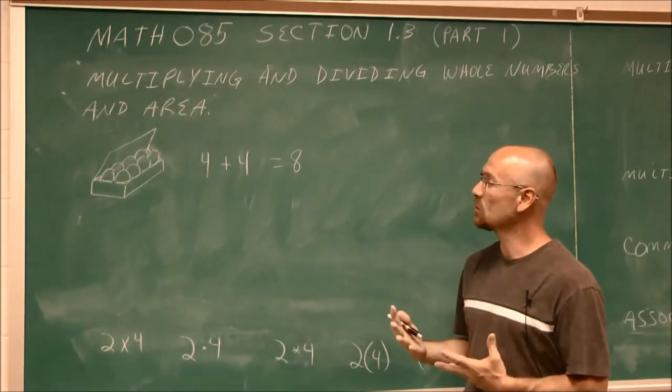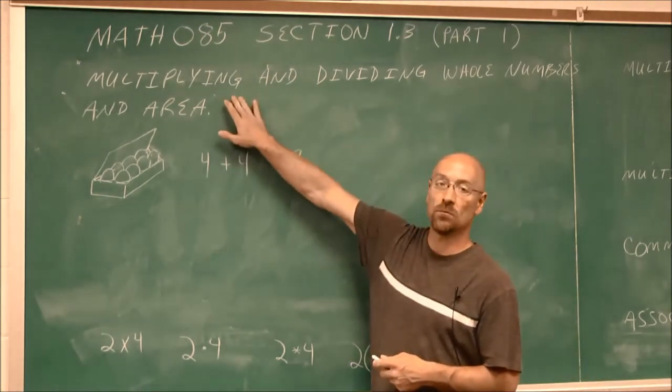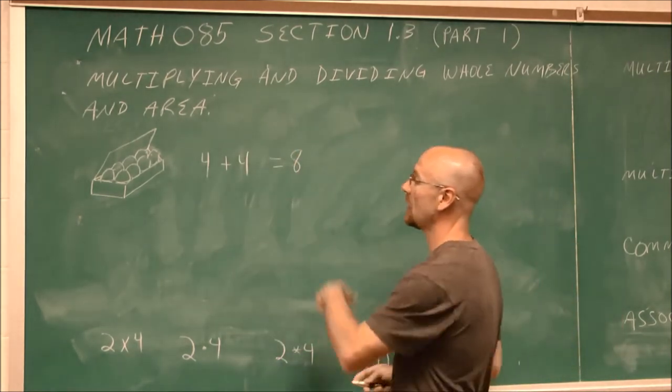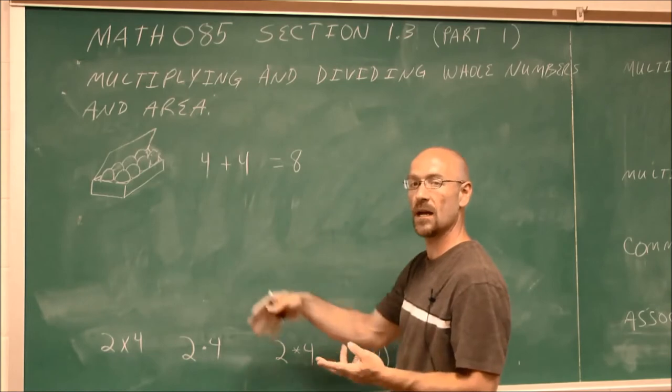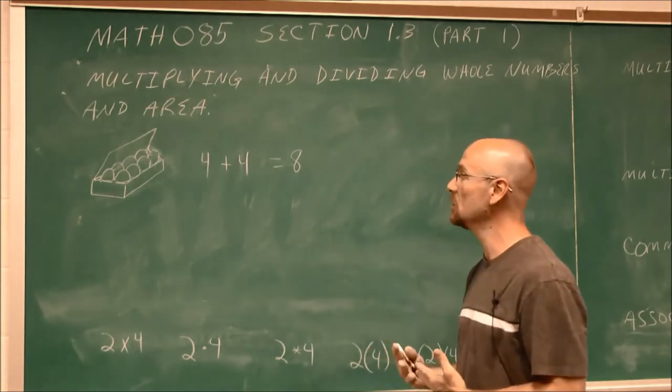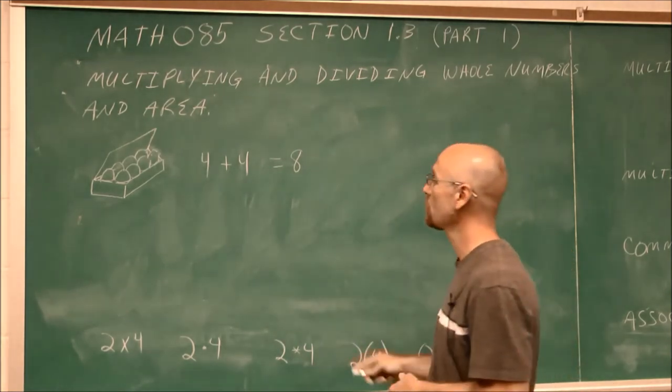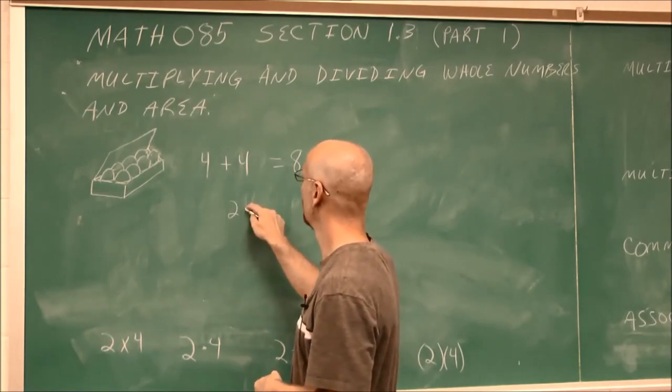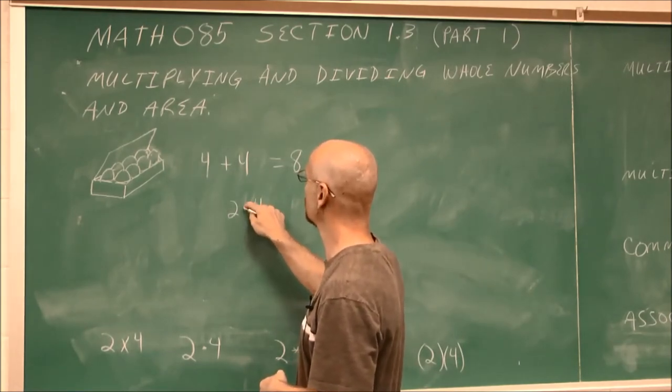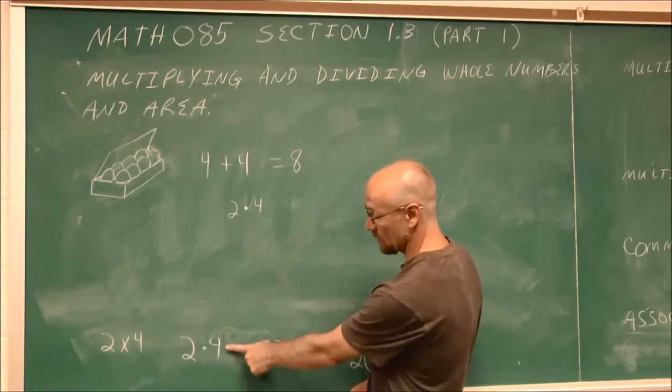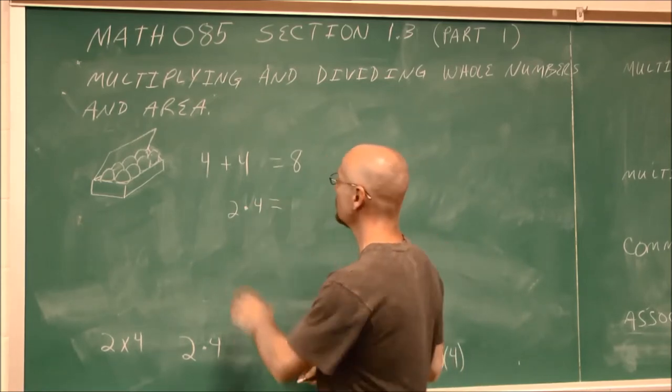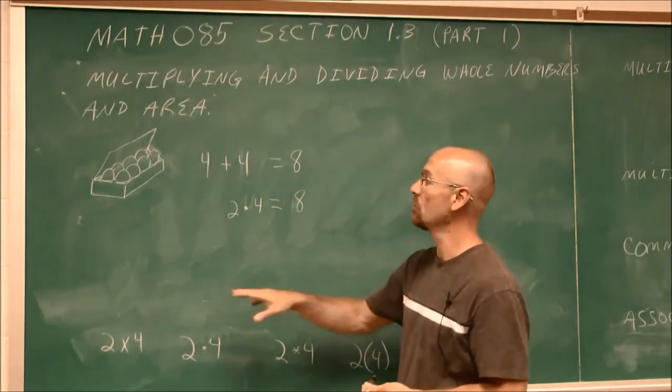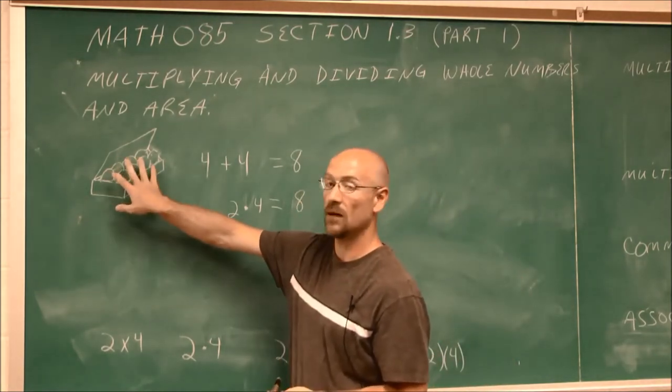When we have repeated addition, that is the definition of multiplying. When it comes to multiplying, we can rewrite this. I have four two times. Times is a word that we use to indicate multiplication. So if I have two times four, and what I'm introducing here is a multiplicative dot, two times four is also eight. So we get the same result. I have two rows of four.